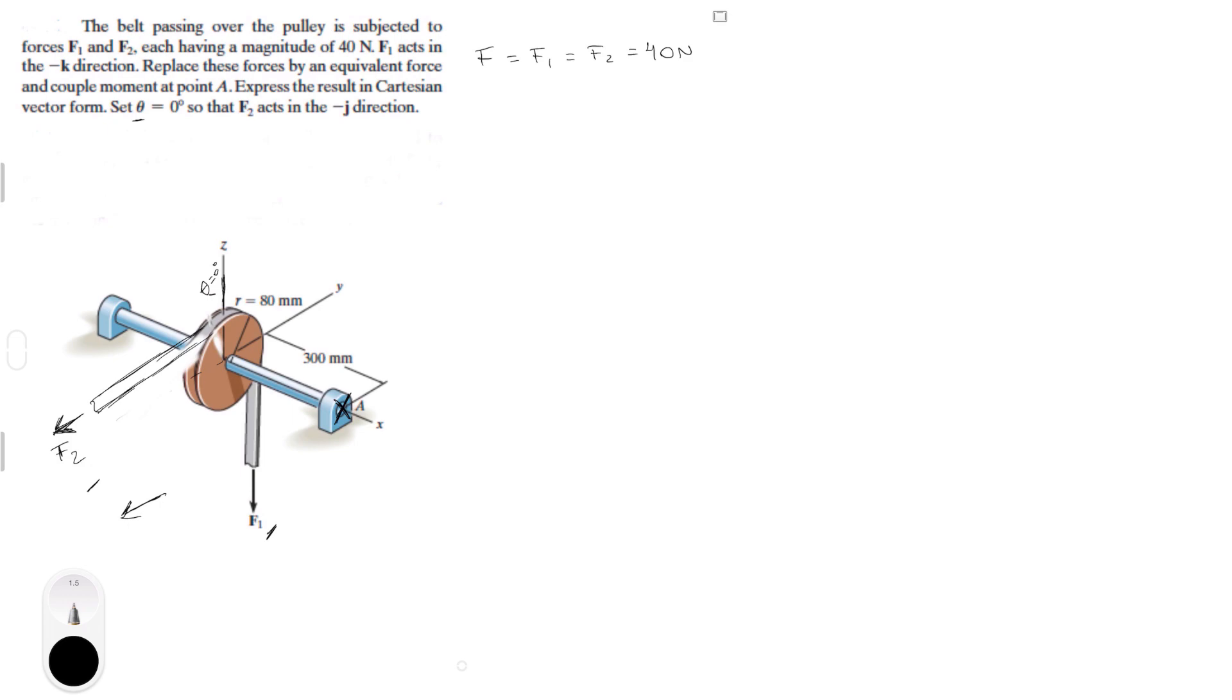So let's get to it. Like I said, the magnitude of F is equal to the magnitude of F1, which is equal to the magnitude of F2, which is 40 Newtons. So let's draw the Cartesian vector form of each of these ones. Which F1 is zero on the i plus zero on the j minus 40 in the k, and this is in Newtons, because it's going straight down in the k direction.